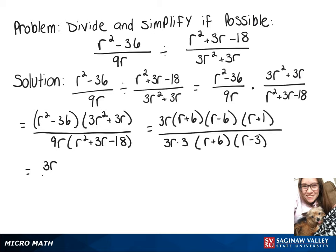Now we can rewrite this as 3r over 3r times r plus 6 times r minus 6 times r plus 1 over 3 times r minus 3.